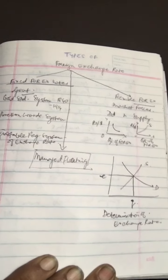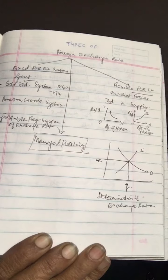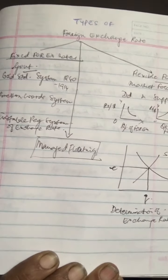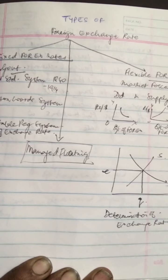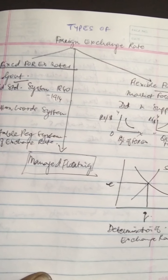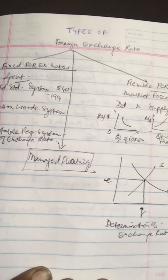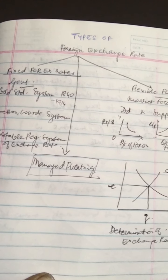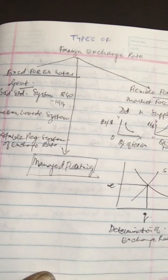Talking about the fixed exchange rate, we see that under this system, exchange rate is fixed by the government. The basic purpose of adopting this system is to ensure stability in foreign trade and capital movements.